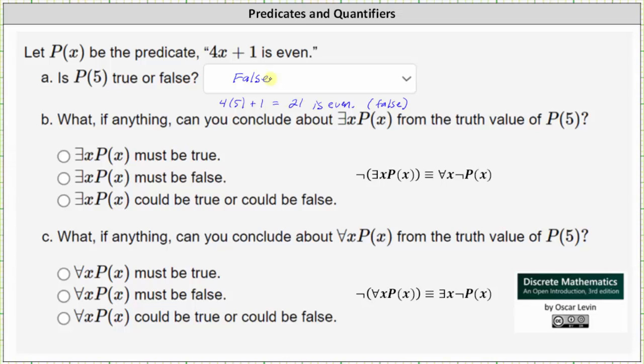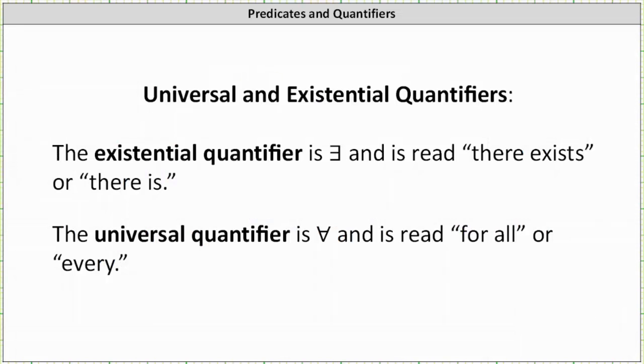Before we take a look at parts B and C, let's review mathematical quantifiers. The existential quantifier is this symbol shown here, which looks like a capital E facing the wrong direction and is read 'there exists' or 'there is.' The universal quantifier is this symbol which looks like an upside down capital A and is read 'for all' or 'for every.'